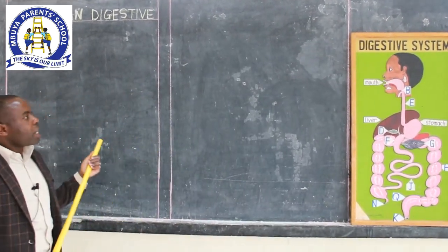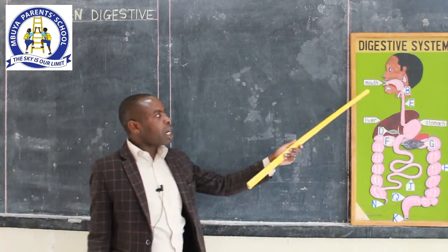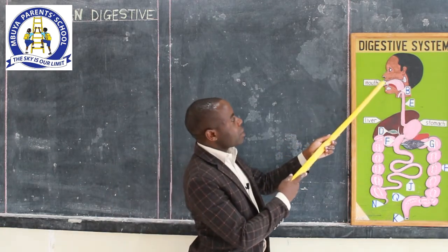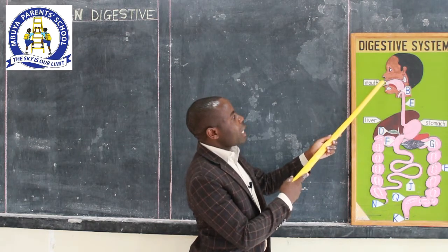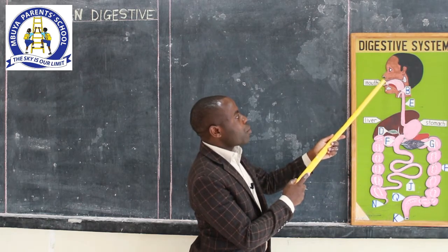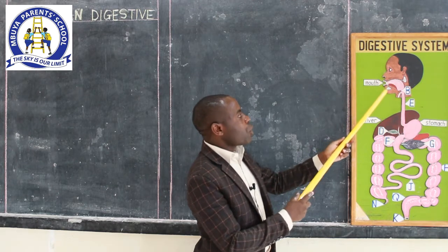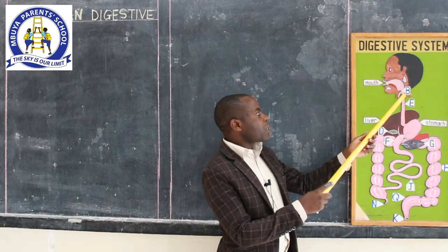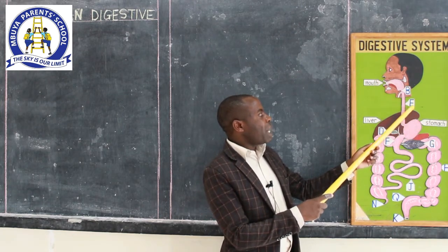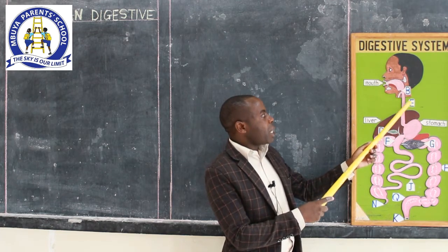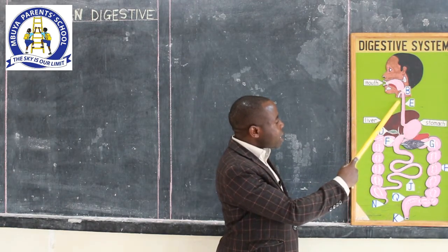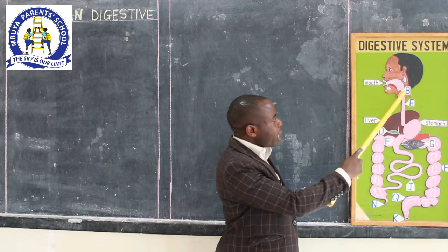The digestive system in man begins from the mouth, as you are seeing here on our model. This part is what you call the mouth, and you are able to see the teeth. This is where we put food, and food is first broken down by the teeth — that is what you call mechanical digestion, because food is broken down mechanically. When we swallow food, it comes along this passage. There is also a passage going to another body system — the respiratory system — leading to the lungs.